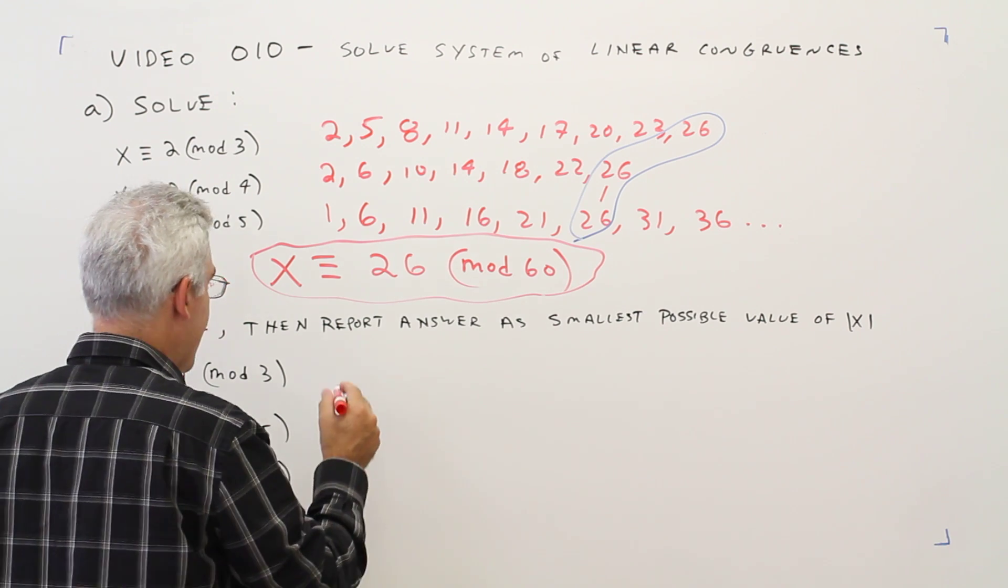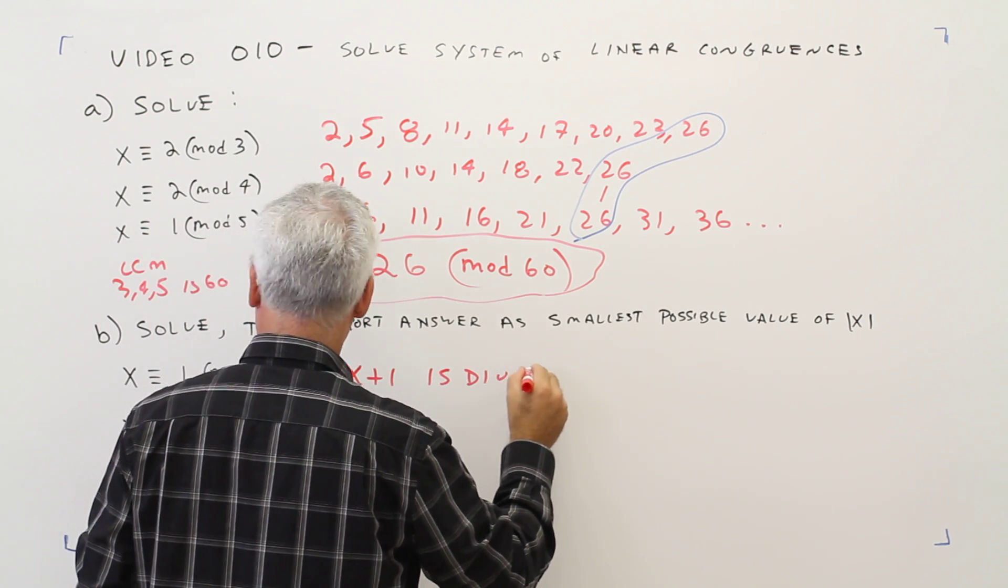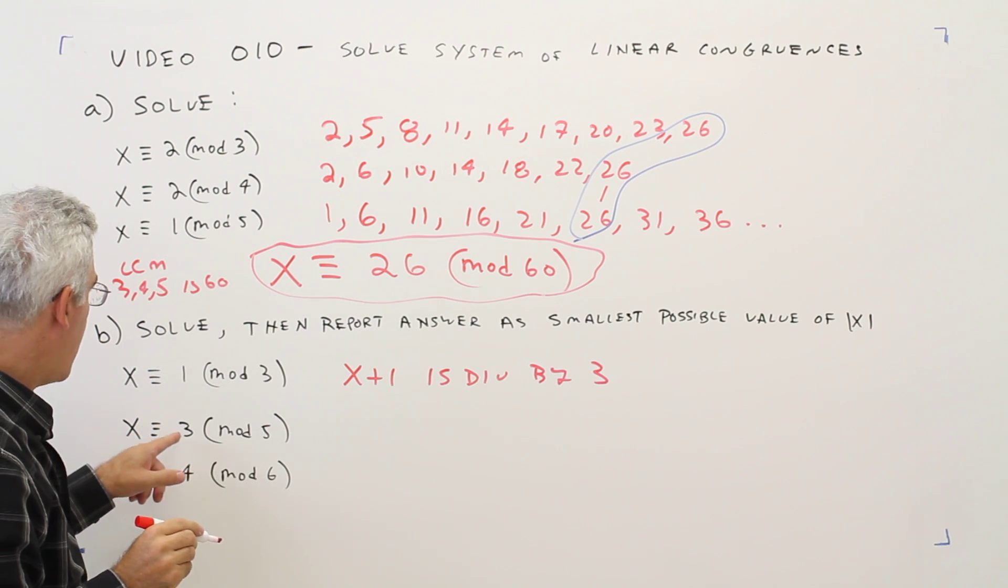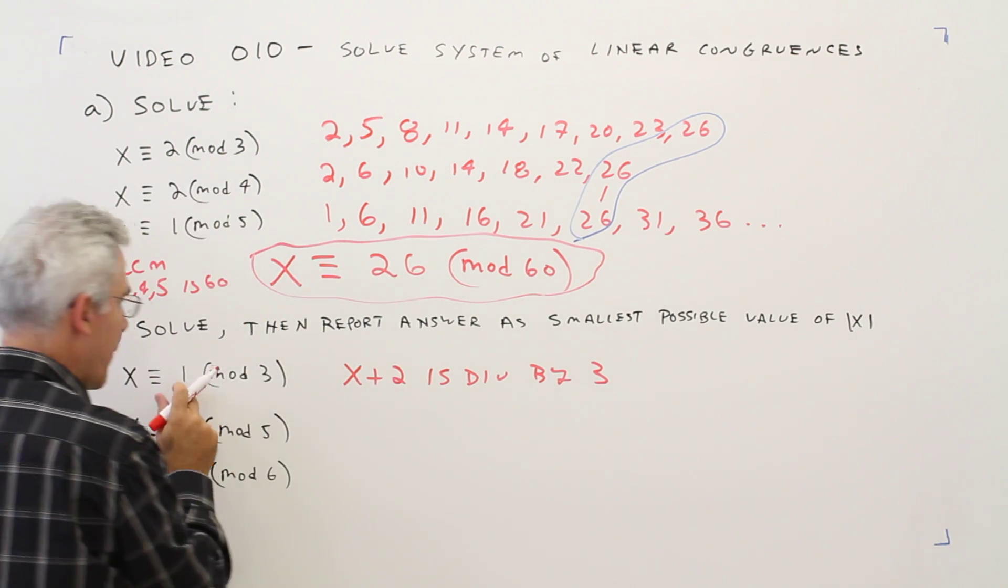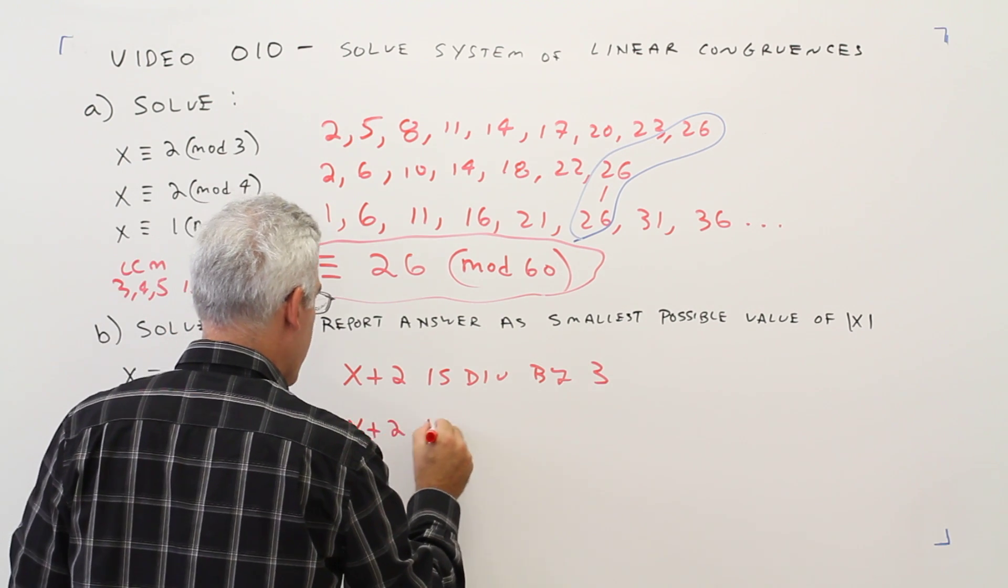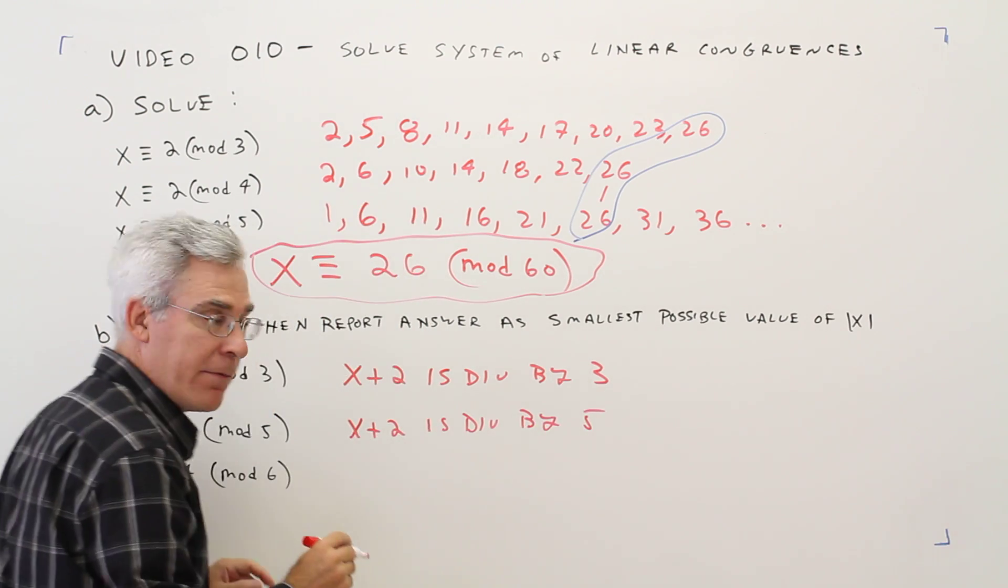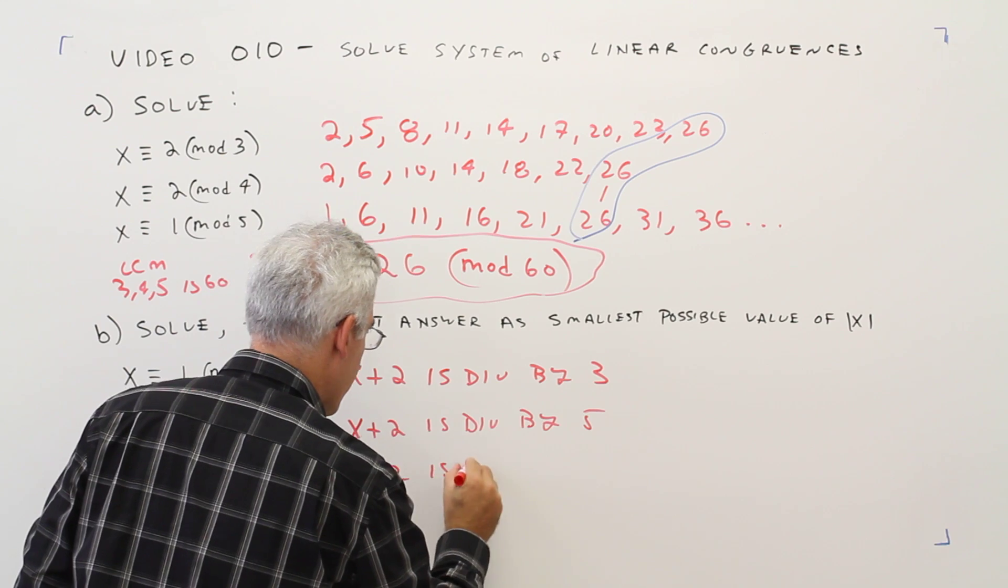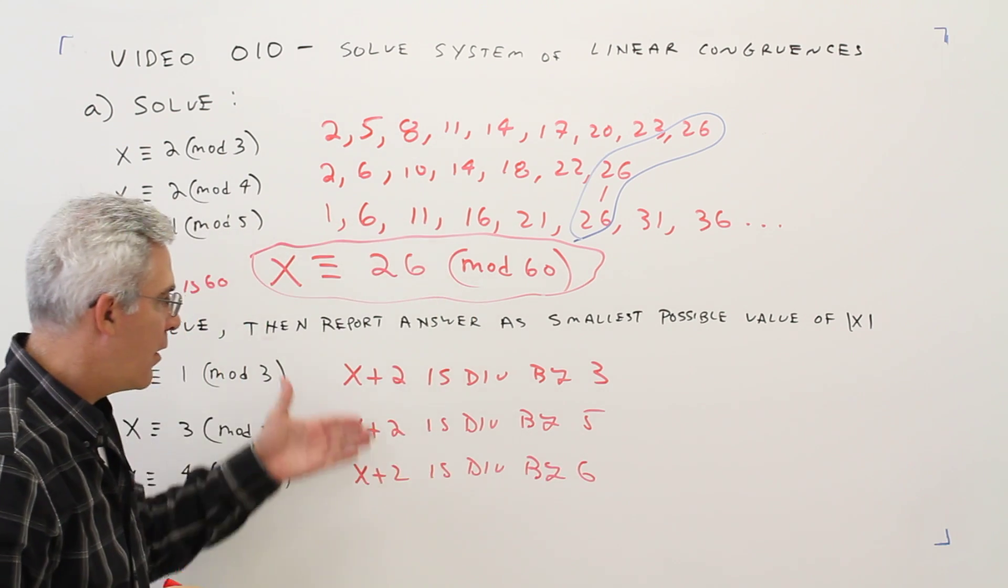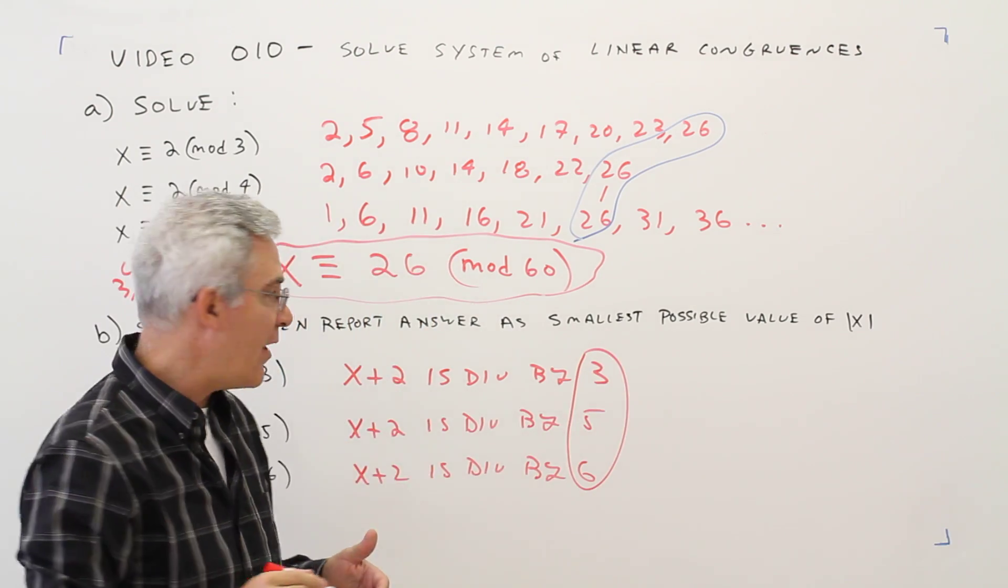So what this means is x plus 2 is divisible by 3. I'm sorry, x plus 2. It differs by 2. This means x plus 2 is divisible by 5. And this means x plus 2 is divisible by 6.